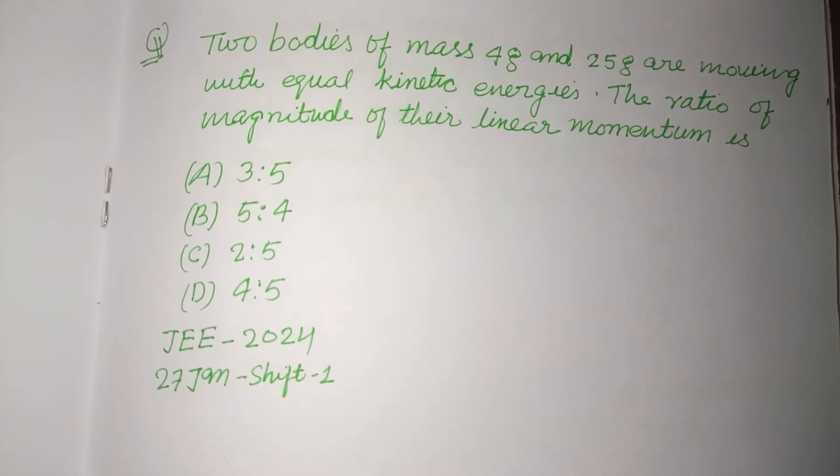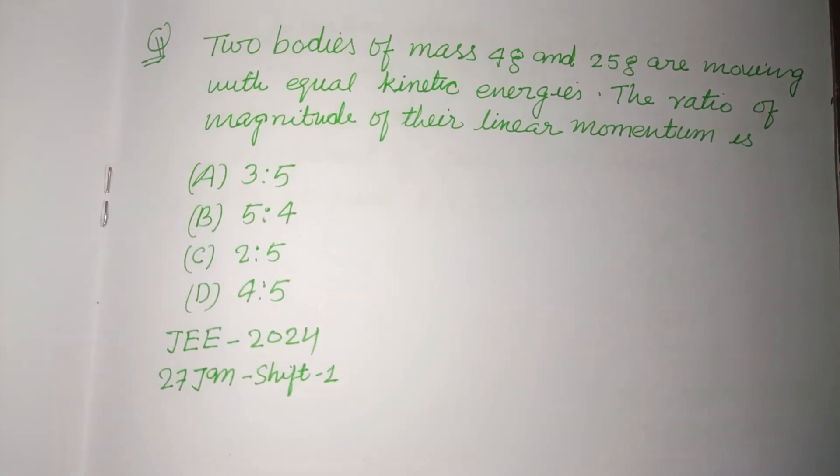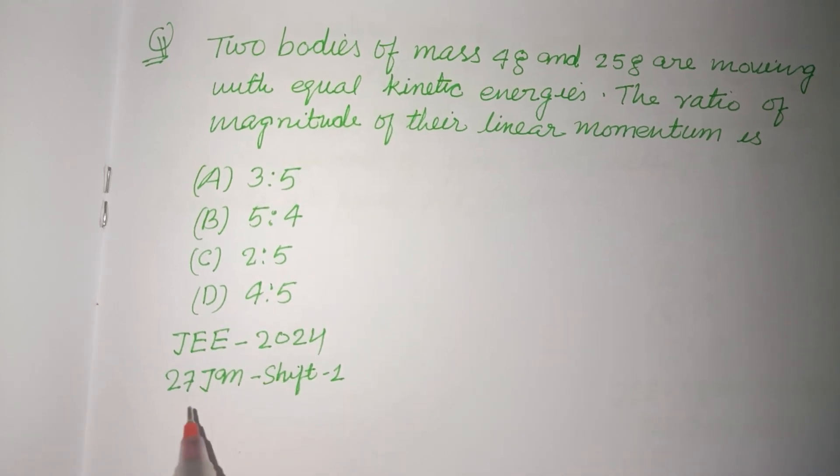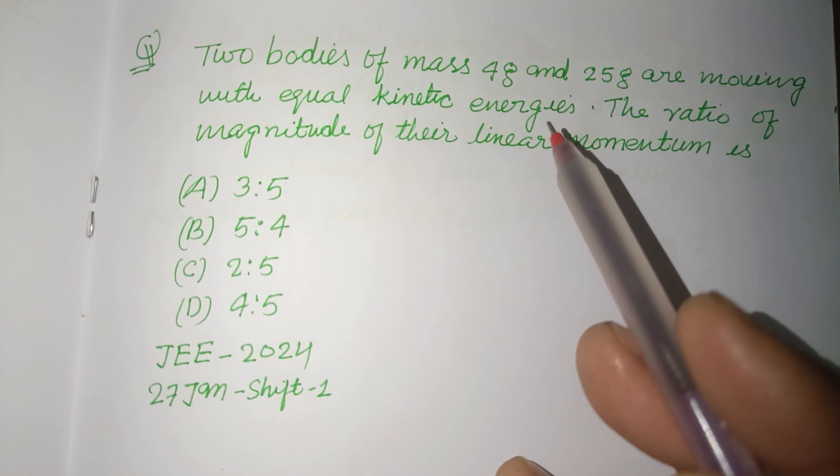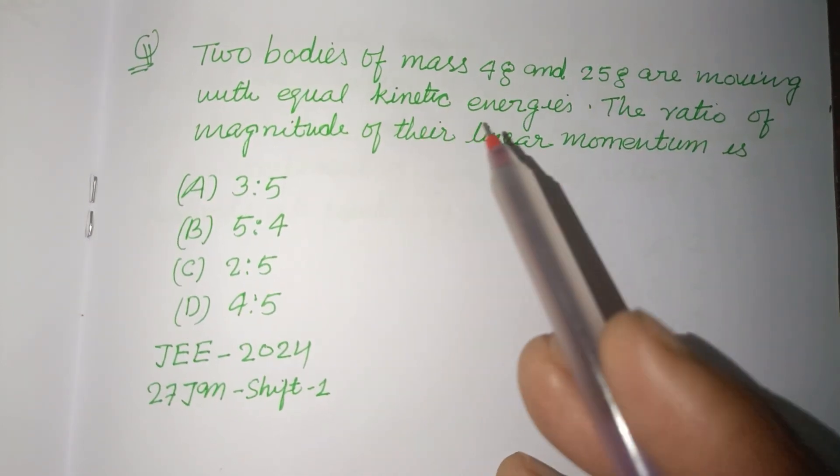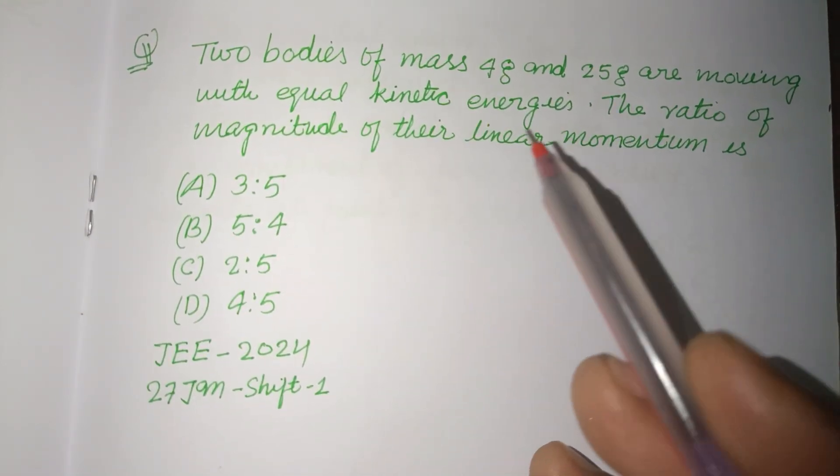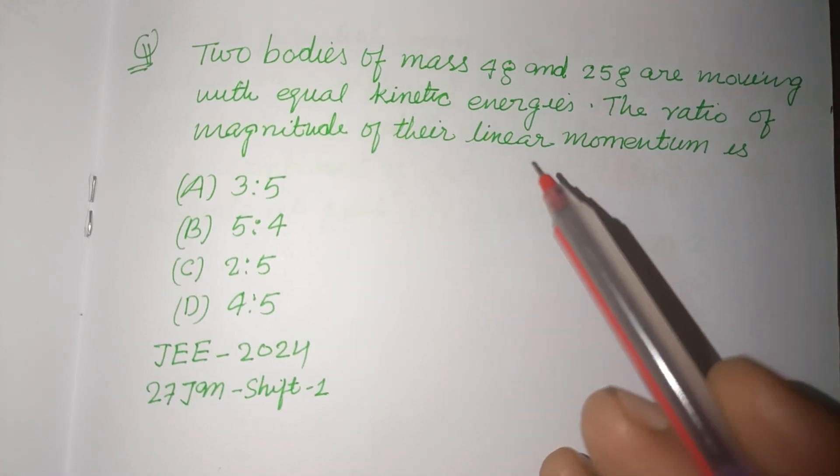Hello viewers, warm welcome to this YouTube channel. This is a question from JEE Main 2024, 27th January, Shift 1. Two bodies of mass 4 gram and 25 gram are moving with equal kinetic energies. The ratio of magnitude of their linear momentum is...